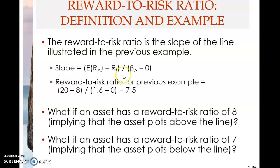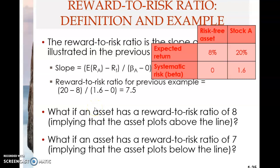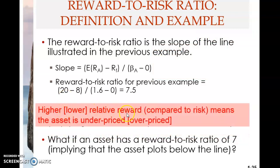Welcome to part 3 of this chapter 13. In the last clip we were looking at this slide — the reward-to-risk ratio based on the stock. If another stock has a reward-to-risk ratio of eight, which is higher, investors are being rewarded more than the risk involved. Therefore more investors will purchase this, and this is only possible when the price of the asset is lower. Higher the relative reward means the asset is underpriced.